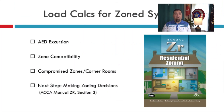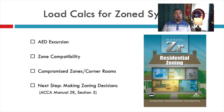Just to recap: we talked about AED excursion and how to know when you need to zone a system. We talked about zone compatibility — remember, it's not just the biggest rooms or ones that face south. They need to be compatible directionally, by time of day, or by floor. We covered compromised zones and corner rooms and how to handle those. If you're not sure about zoning and don't know what to do next, take a look at the video on Section 3 of ACCA Manual ZR called 'Making Zoning Decisions' — highly recommended before zoning out your next house.